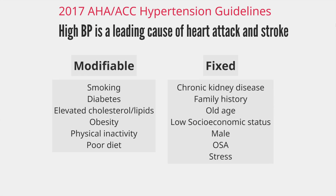In 2017, new guidelines were created by the American Heart Association and the American College of Cardiology addressing the proper diagnosis, classification, and treatment of high blood pressure. Today, let's review together how diagnosing high blood pressure has changed and how we can assess a person's risk for cardiovascular disease. Everything we discuss today can be found in the 2017 AHA Hypertension Guidelines, and I encourage you to review the executive summary, which I'll link in the description below.